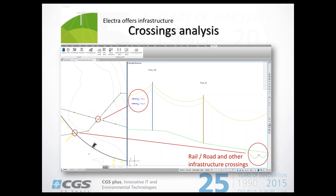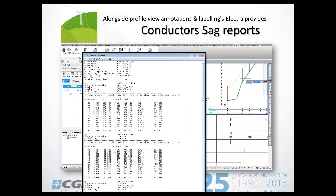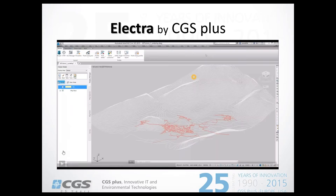There is also a rail track in one section, and the distance between the envelope of the rail vehicle and the cable can be inspected. At the end, Electra produces reports for all conductors attached to the poles, with all parameters from minus 20 degrees to plus 40 degrees and all needed calculated values, so designers get all necessary information about the sags.